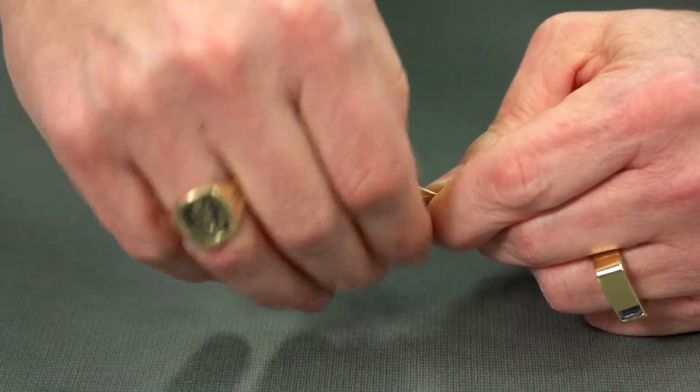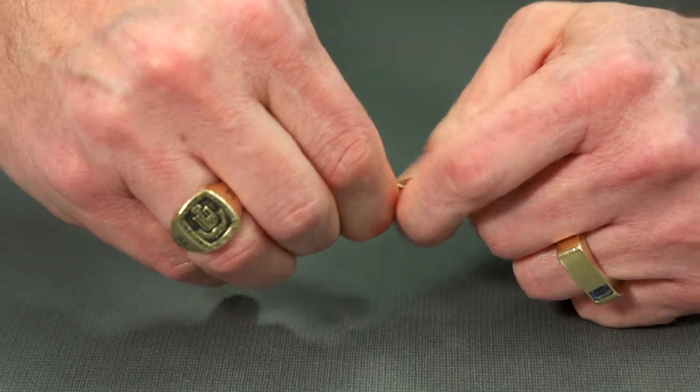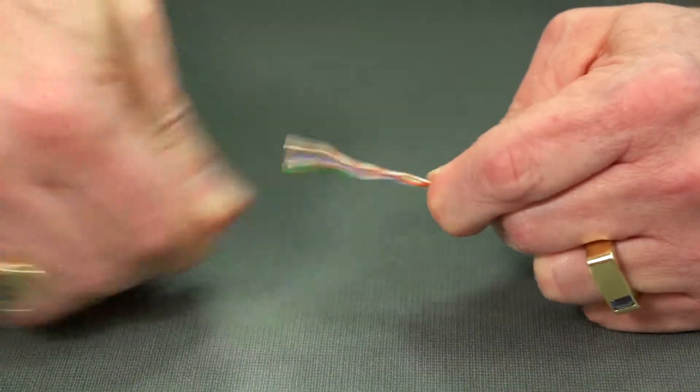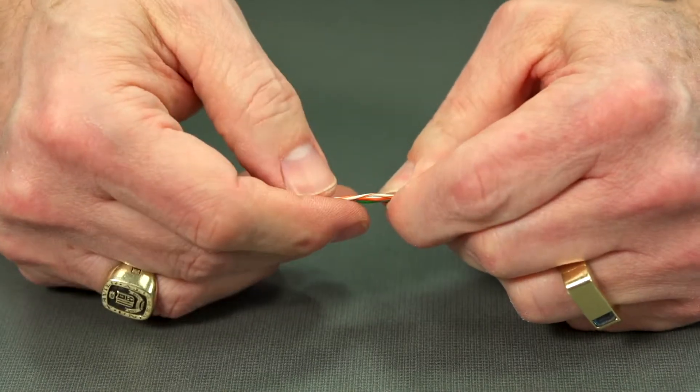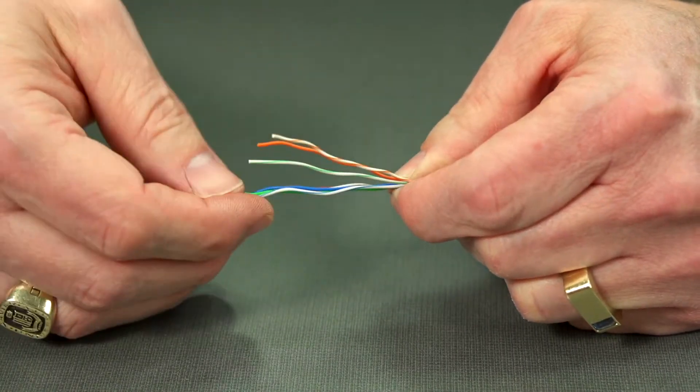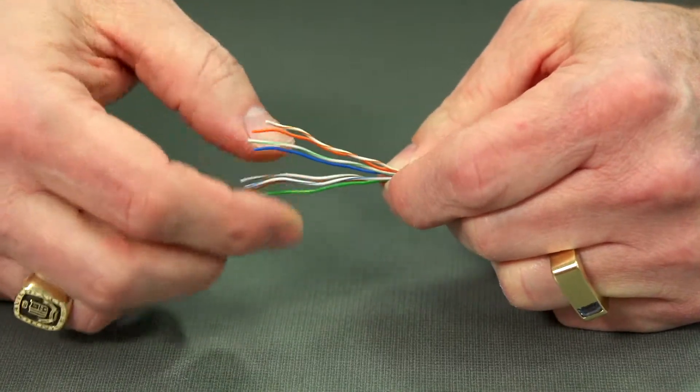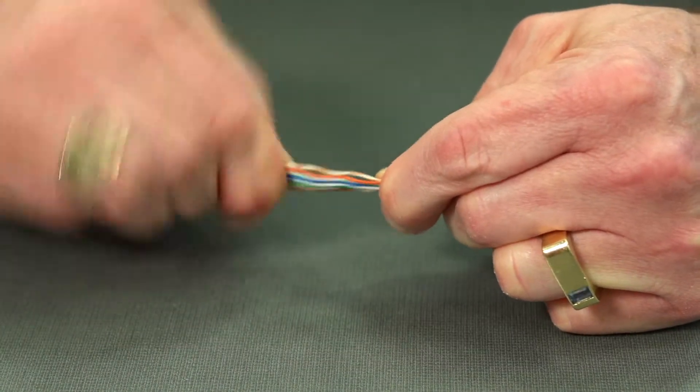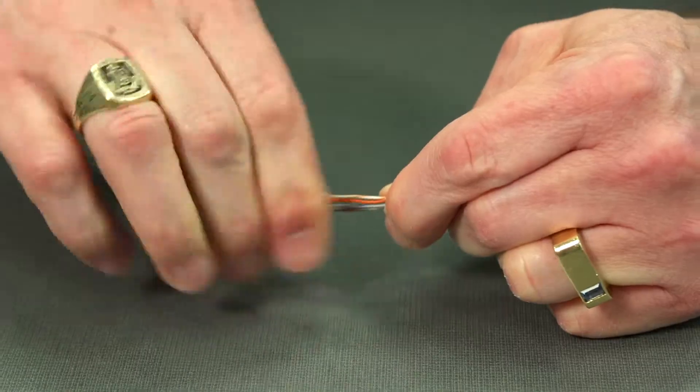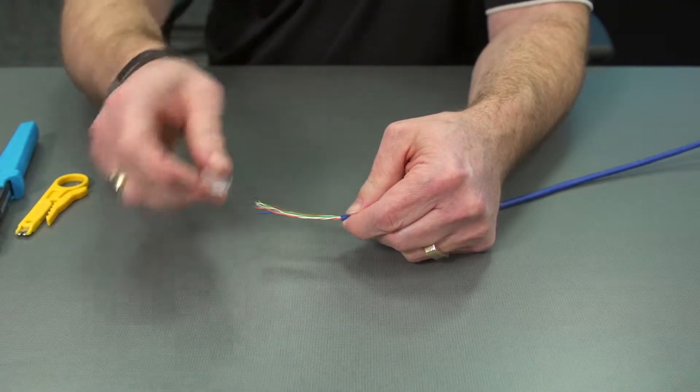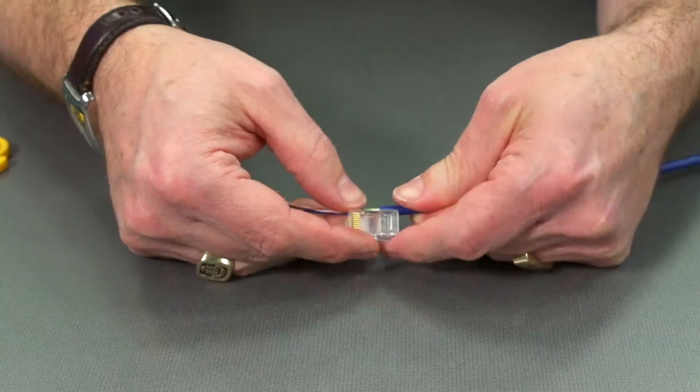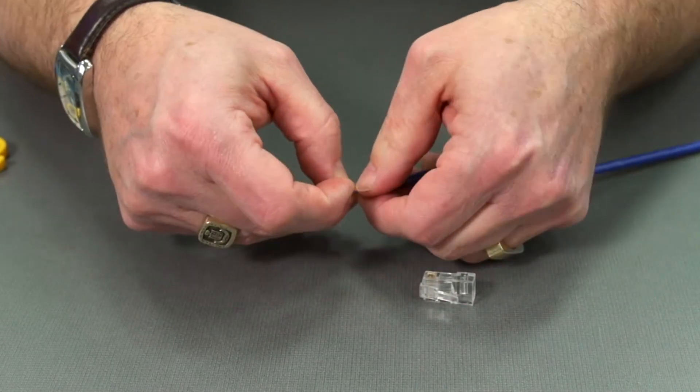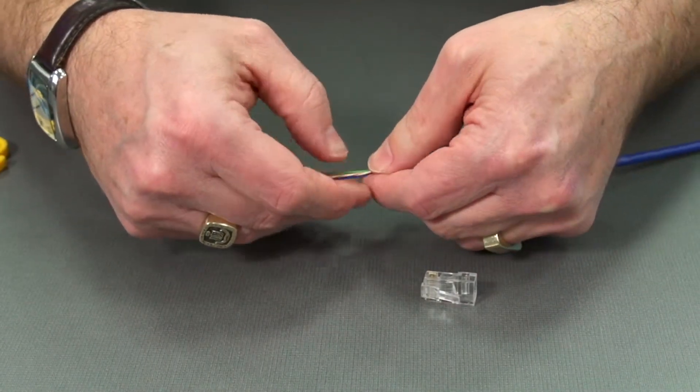And we're going to again work these in order and bend them back and forth and make them into a ribbon. Make sure my colors are still good. We find our connector and we see that we're going to have to have the jacket up to this point and then our cables up front.